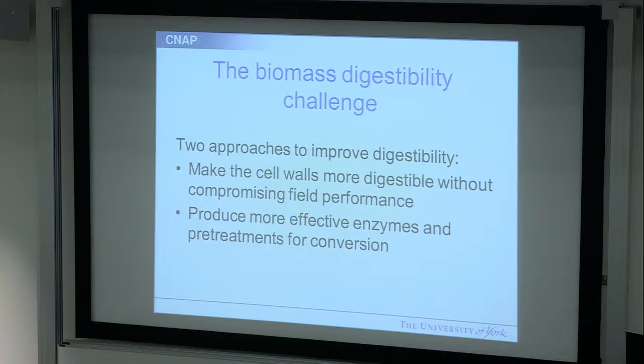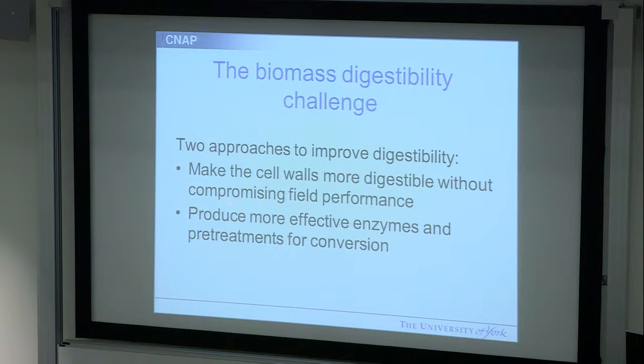That's the biomass digestibility challenge. Those sugars are locked up, but we need to be able to get them out in a cost-effective manner. Work in my group looks at two approaches to improve digestibility: one is looking at what is it about that cell wall material that makes it hard to digest, and what opportunities do we find in natural variation or induced variation or through transgenesis that might change that to make it more digestible. We have to think about whether that's going to compromise field performance. We also work in the area of looking for new enzymes and new ways of converting lignocellulosic biomass.